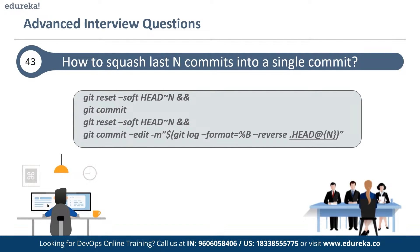In the first option, if you want to write the new commit message from scratch, you should use the following commands: git reset --soft HEAD~N, followed by git commit. In the second option, if you want to start editing the new commit message with a concatenation of the existing commit messages, you need to extract those messages and pass them to git commit.